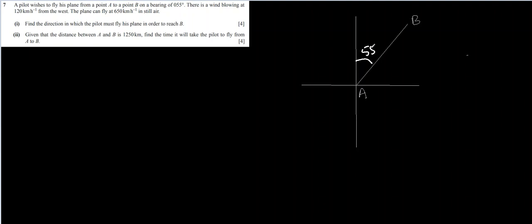The plane can fly 650 kilometers per hour and there is a wind blowing from west, from west means towards east. So let's try to draw this. It is 120 kilometers per hour.